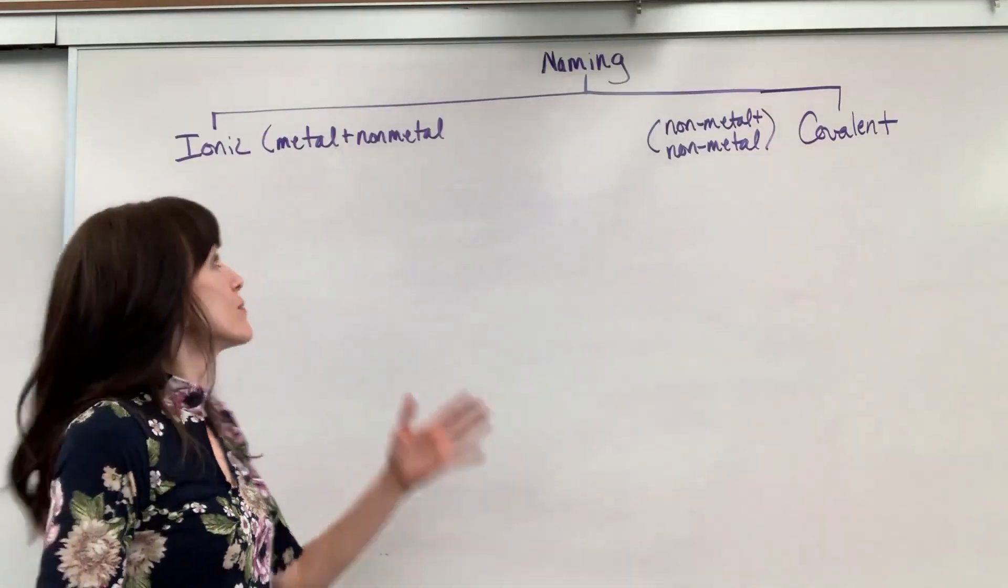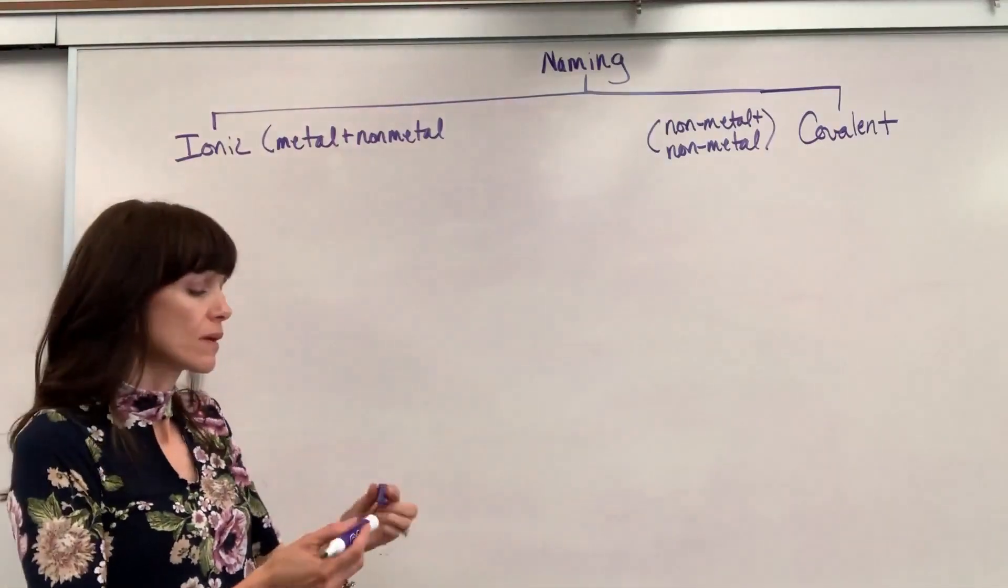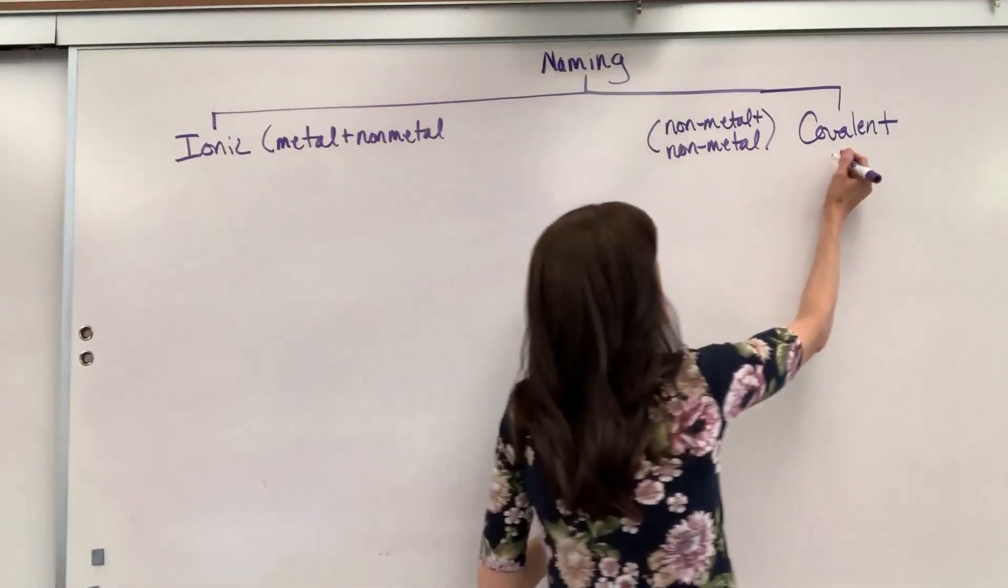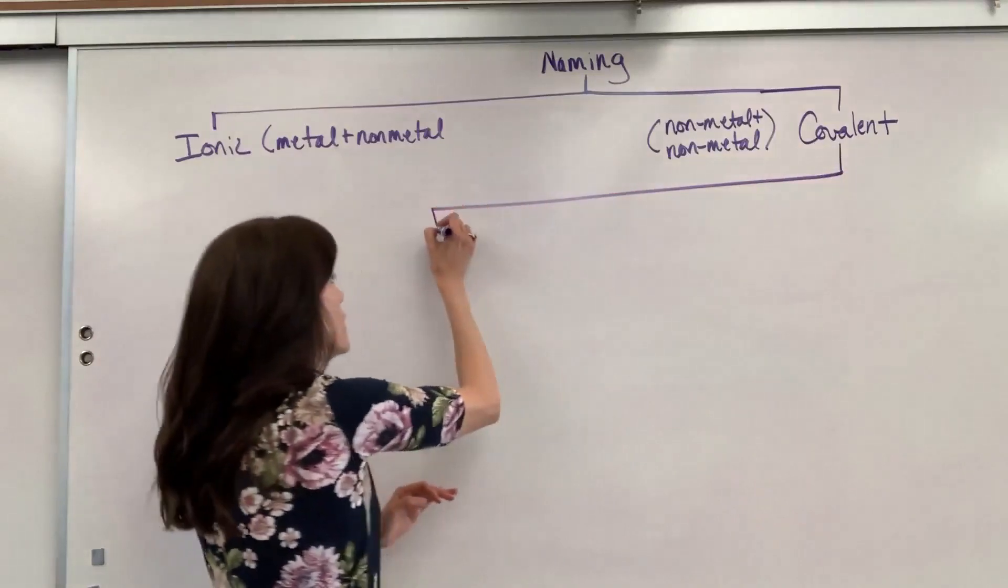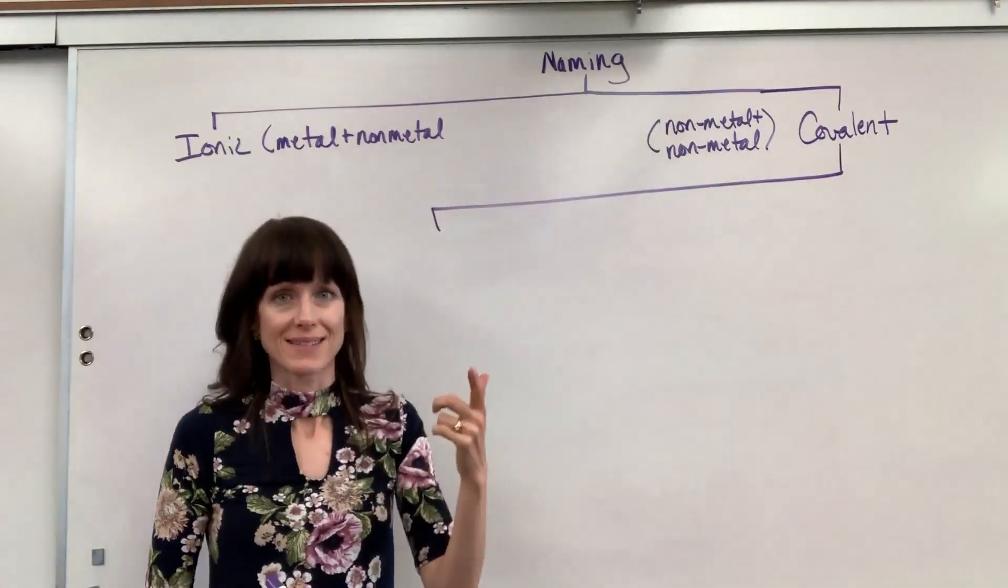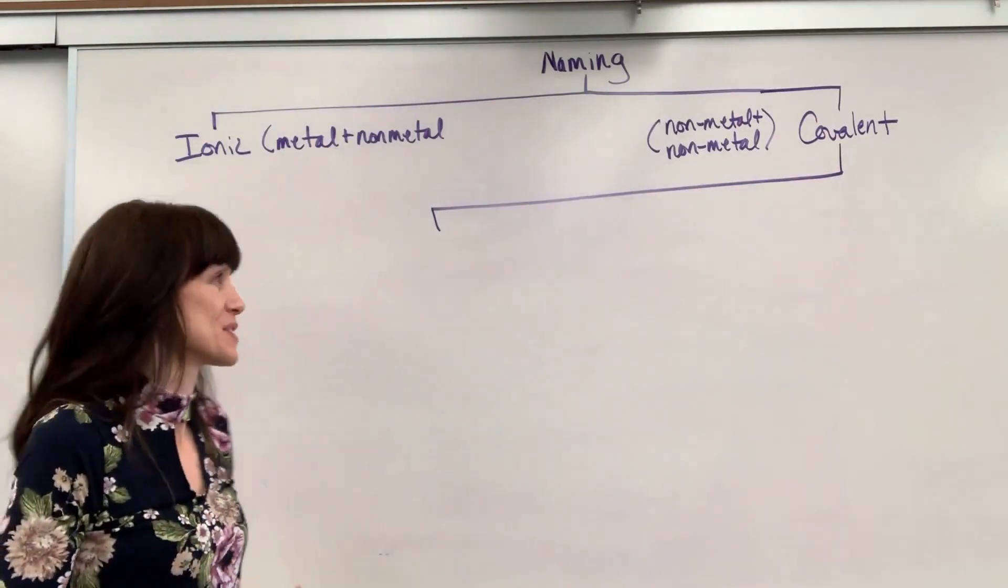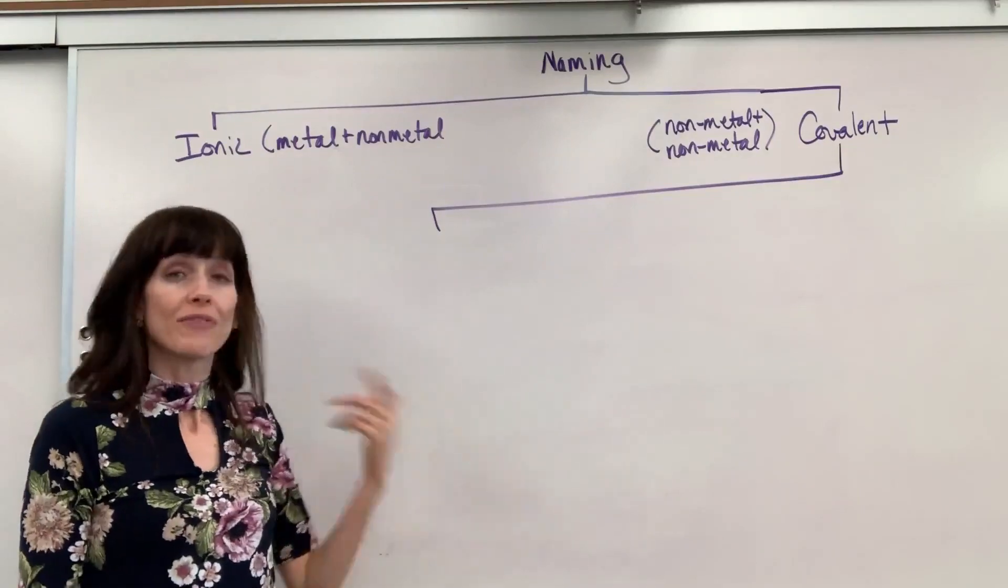We're going to continue with naming. We've done ionic, now we're going to do covalent naming. Covalent naming, we're going to break into binary molecules and acid molecules. I'm going to pull this way over here. We're going to need quite a bit of room for the acid part.